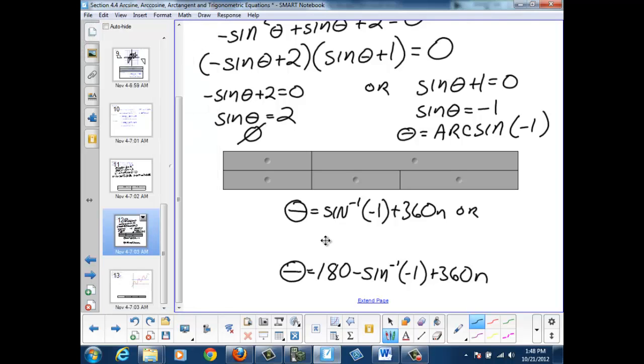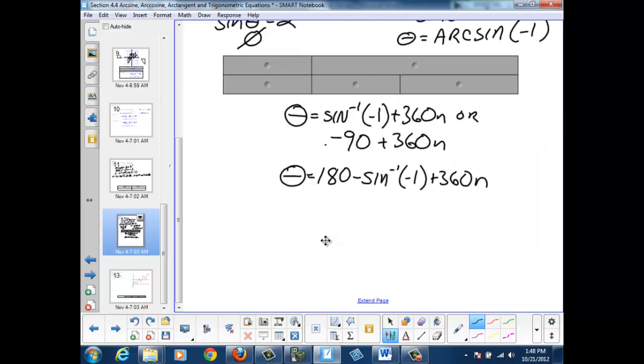So we can come back here and say negative 90 plus 360n for solutions, or 180 minus a negative 90 plus 360n.